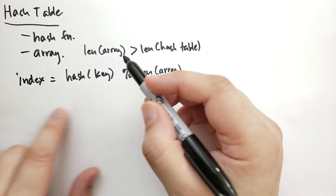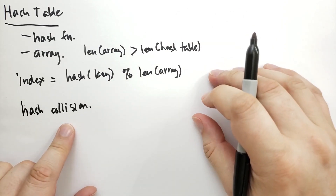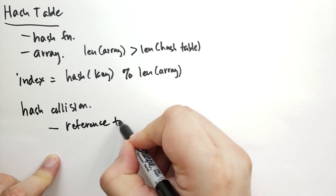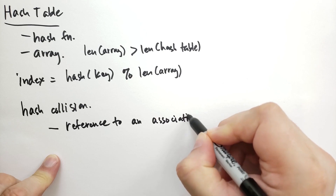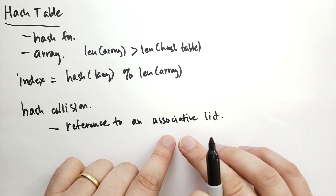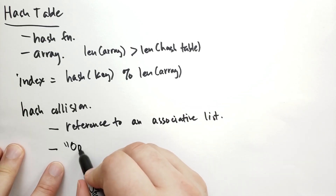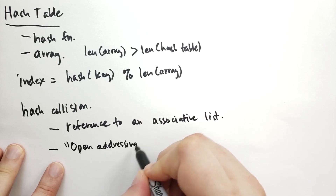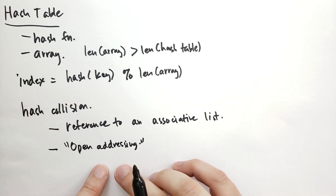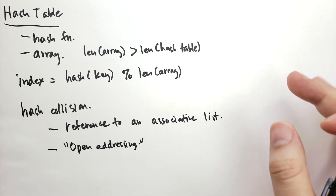Sometimes the index for two different keys will be the same, in which case you have a hash collision. There are two ways to resolve a hash collision that people typically use. One way uses a reference to an associative list, which is an array where the values are key-value pairs. The other way to resolve a hash collision is with something called open addressing. In open addressing, we look at the position in the array — if it matches the key, we use it; if it doesn't, we look at the next element and the next until we find an empty element. If we find an empty element, we know that key isn't in the hash table.